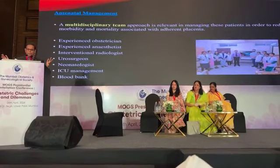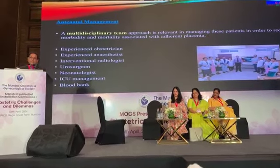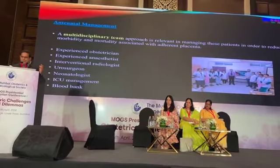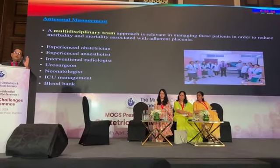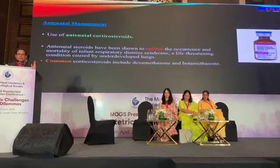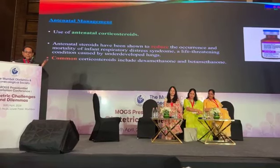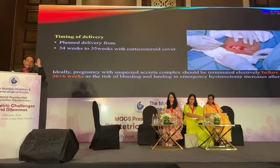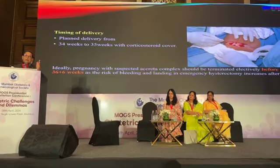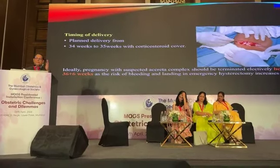It is a multidisciplinary approach. You will need an expert obstetrician, an expert haematologist, an expert anaesthetist, and if necessary a urological surgeon in case of bladder involvement, along with ICU management and blood bank facility. Remember to at least prepare 3 to 4 units of blood because you are going to have significant blood loss in such a situation. The role of antenatal corticosteroids for lung maturity and timely delivery is important — do not wait until 37, 38, or 39 weeks. Plan surgery at about 34 to 36 weeks for the best outcome.